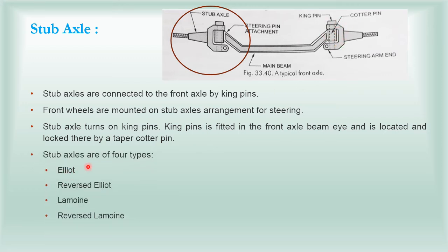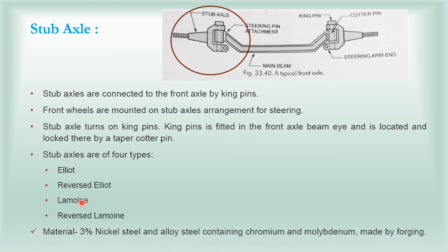Here we have seen in the previous lecture that it has four types: Elliot, Reversed Elliot, Lamoine and Reversed Lamoine. Let us see in the next slides what is the construction. And one thing you have to see is the material of stub axle. This is 3% nickel steel and alloy steel containing chromium and vanadium. It is made by the forging process. In the previous section, we covered the construction of the main beam.